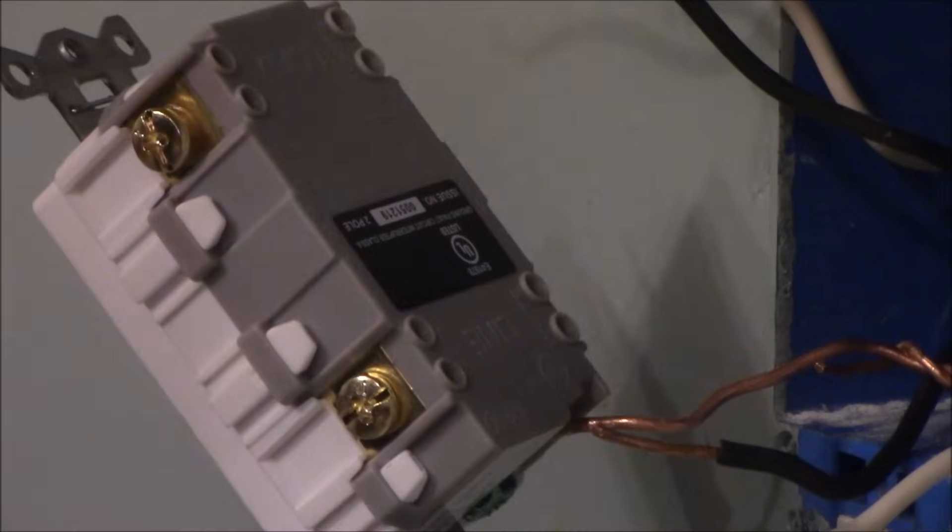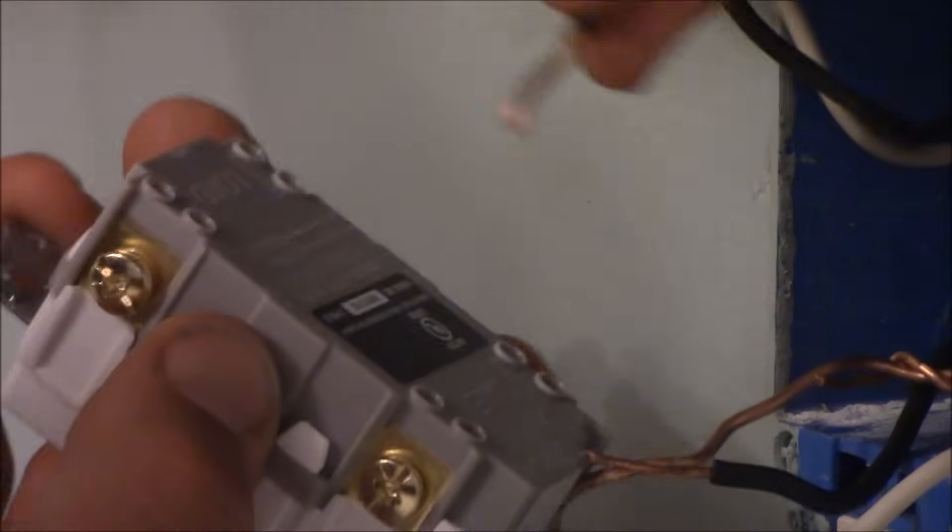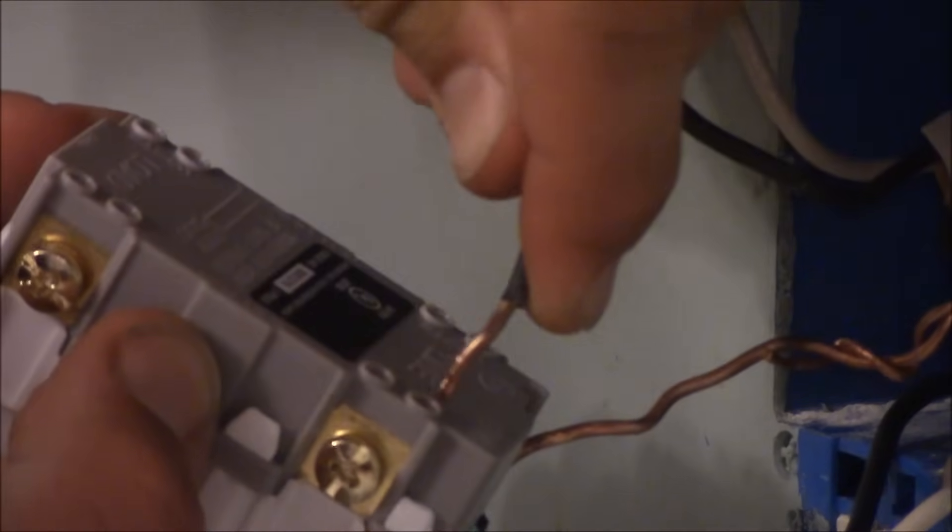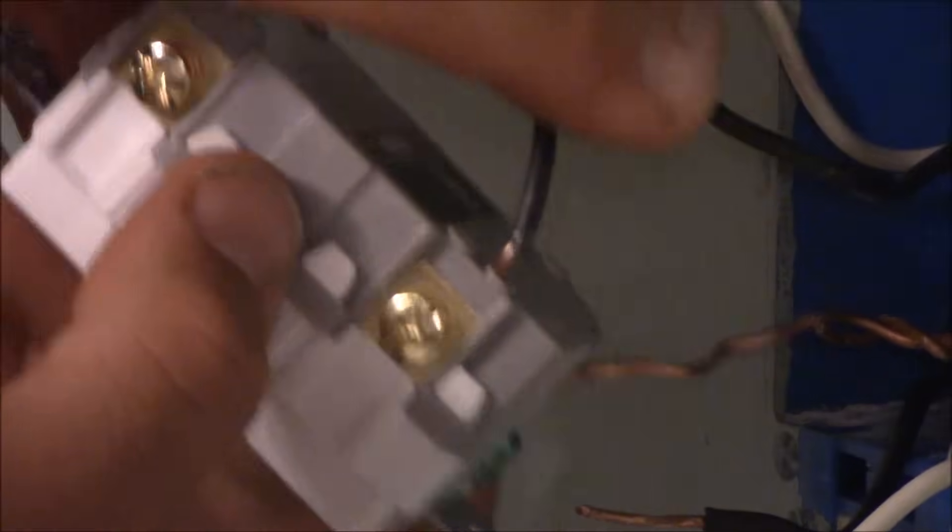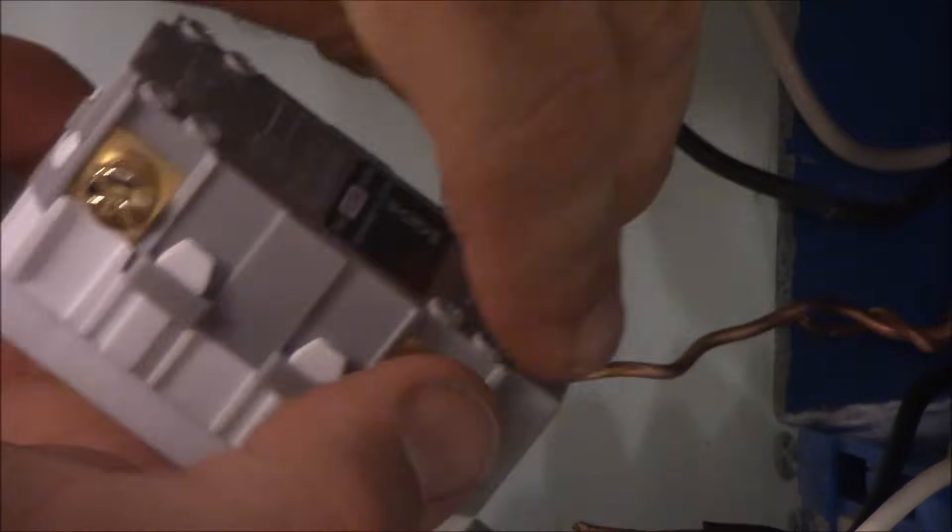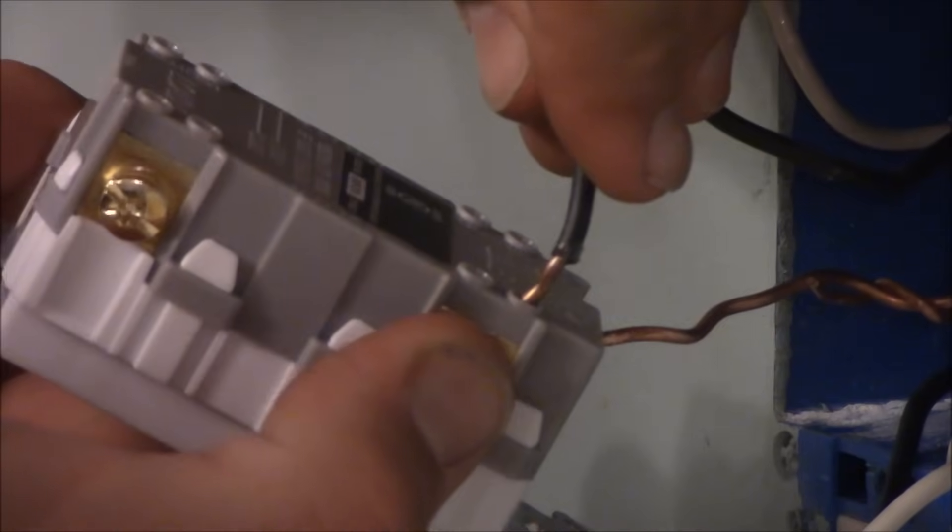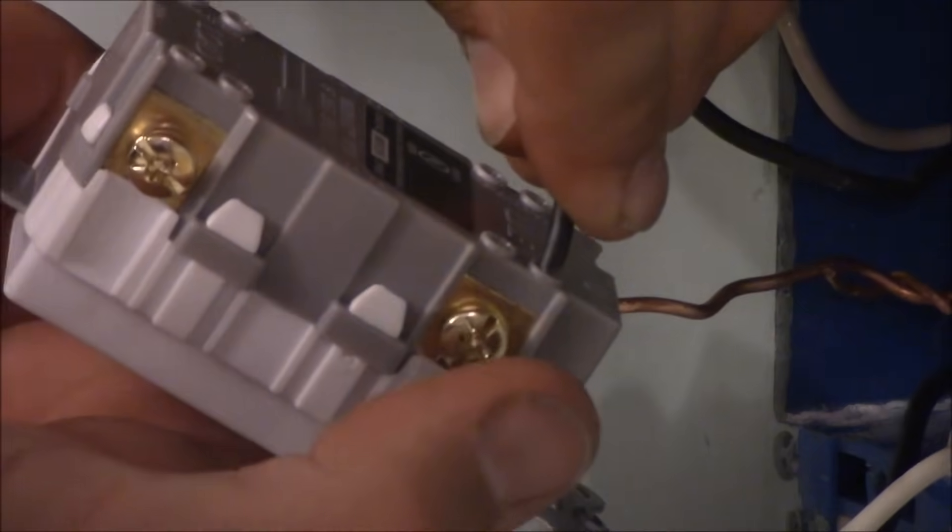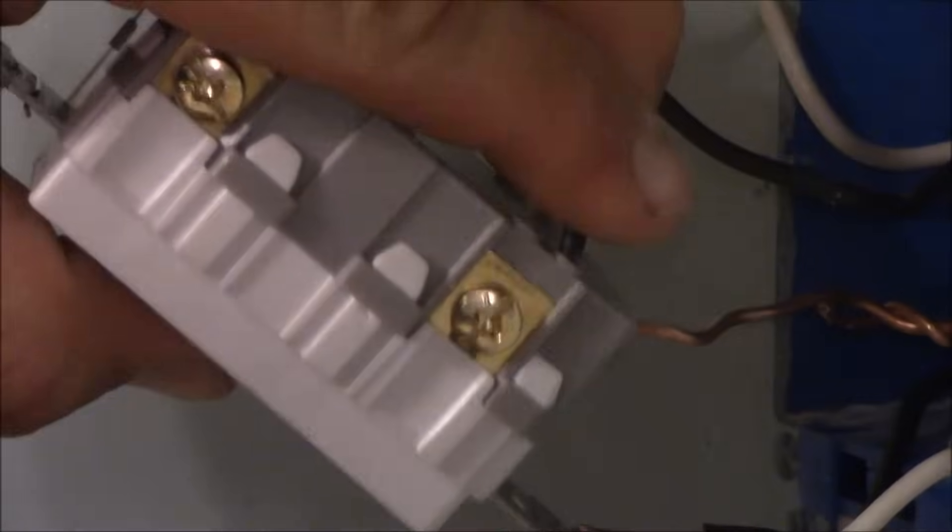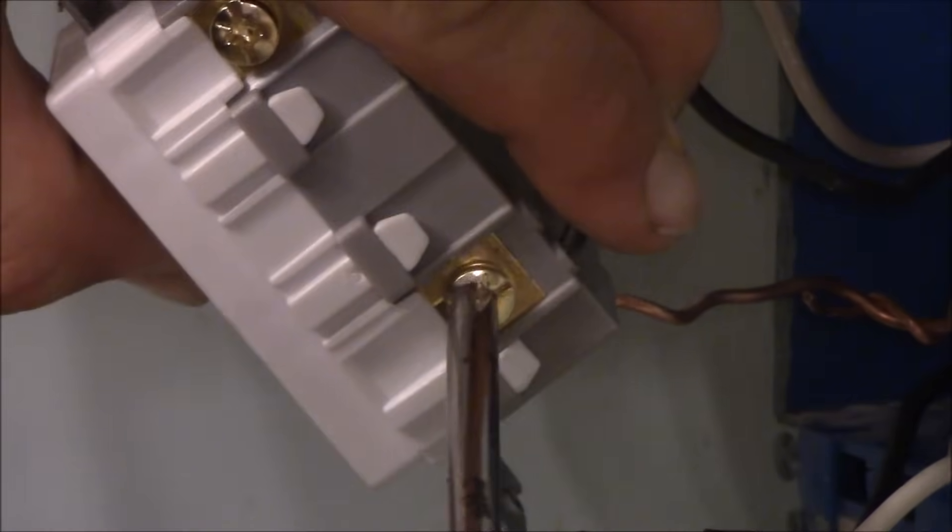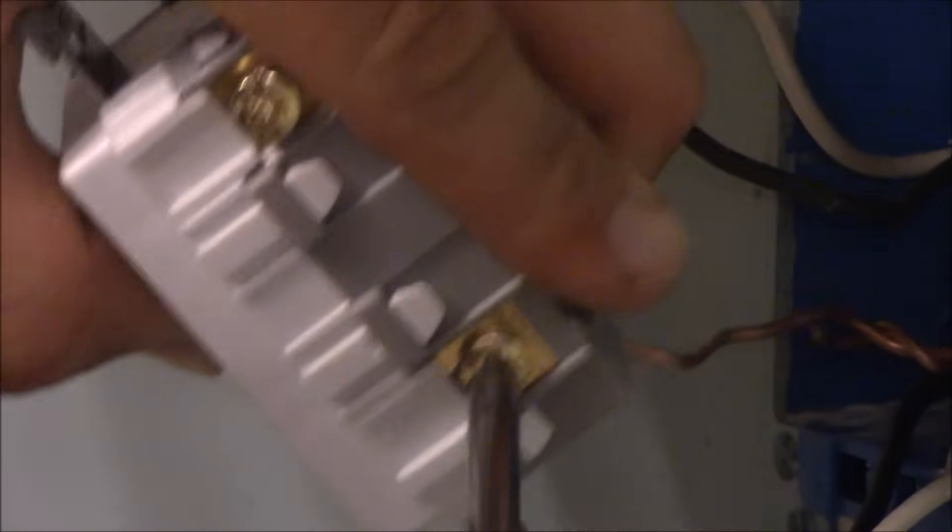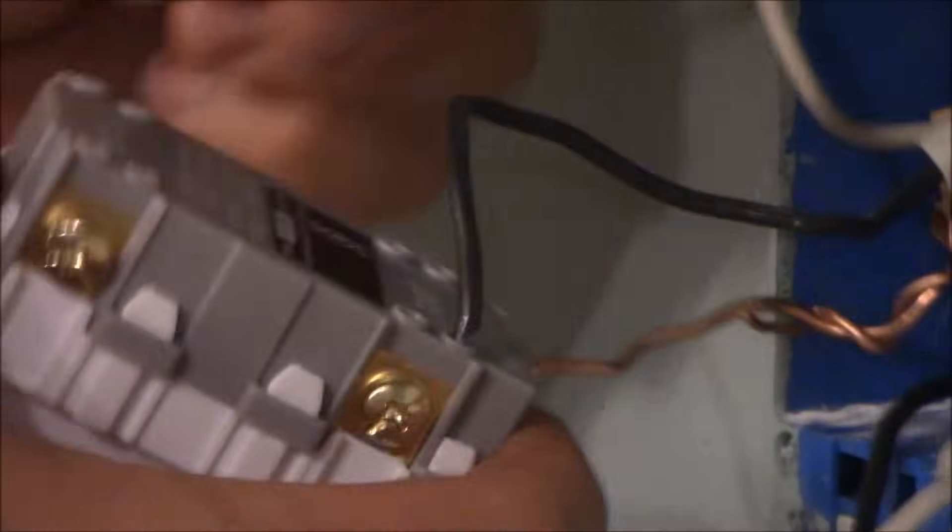Our next step, we're going to go ahead and hook up our line side. So what we're going to do is take the top wires, which we've determined are the hot wires, and we're going to hook them into our line side. You want to make sure that you push the screw in, loosen it up all the way, and then push the screw in so it can go down all the way. And then you're going to tighten it up. You're going to do the same thing with the white.